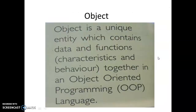Here is Object. Object is a unique entity which contains data and functions, that means Characteristics and Behaviour. Data is called Characteristics and Functions are called Behaviour, and this together is called Object Oriented Programming. So what is Object? Each and everything around us are Objects.